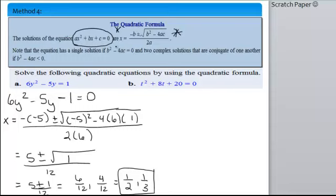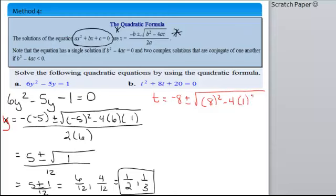Okay, so let's do the same thing for b. For b, we're going to have a is 1, b is 8, and c is 20. So, we'll have t. Sorry about that over here. That should have been a y, huh? Okay, so we'll have t is equal to negative b plus or minus the square root of b squared minus 4 times a times c all over 2a.